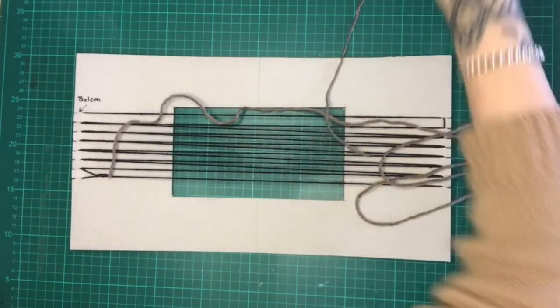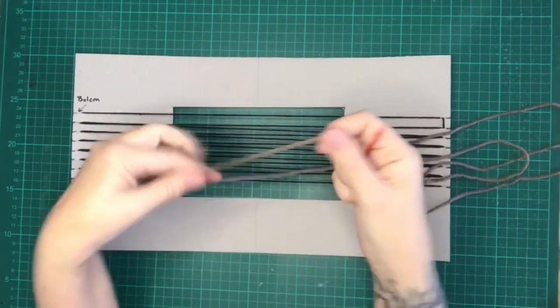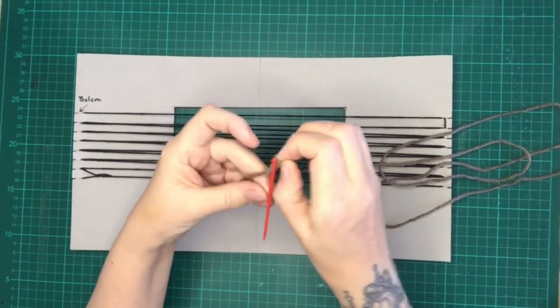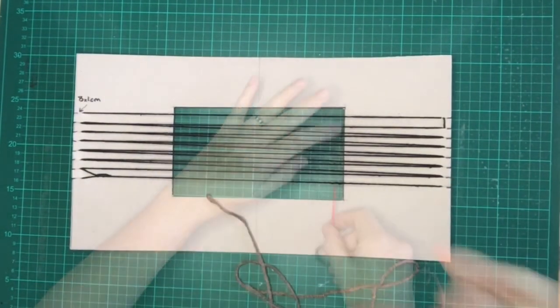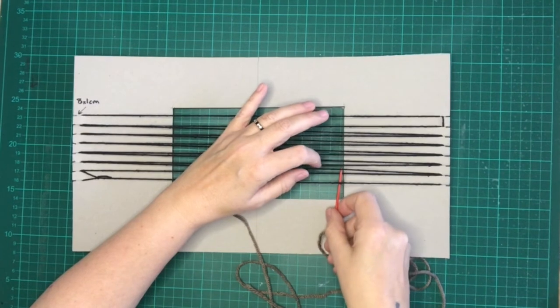And now we can start our weaving. I've chosen some brown wool and cut about a meter and a half of it. I'm threading it onto a wool needle and we can begin.